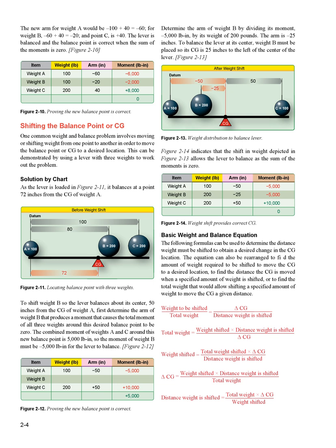Shifting the Balance Point or CG: one common weight and balance problem involves moving or shifting weight from one point to another to move the balance point or CG to a desired location. This can be demonstrated using a lever with three weights. Solution by chart: the lever in figure 2-11 balances at a point 72 inches from the CG of weight A. To shift weight B so the lever balances at its center — 50 inches from weight A — first determine the arm of weight B that makes the total moment of all three weights around the desired balance point equal to zero.